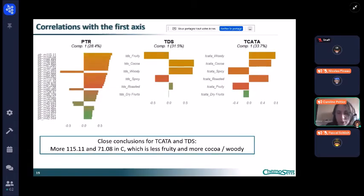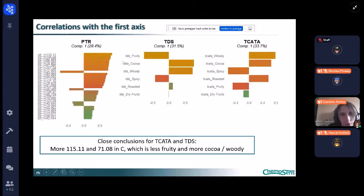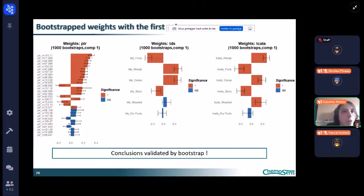After this analysis we can try to know whether some ions are strongly correlated to cocoa and woody, which is strongly explained by the first axis. TDS cocoa woody is strongly correlated to the first axis - that is the case also for TCATA - and so maybe there are some ions which could be strongly correlated to cocoa woody. We have once again close conclusions for TCATA and TDS, and some ions appear more present in the product C, which is less fruity and more cocoa woody. These results can be and were validated with a bootstrap procedure.